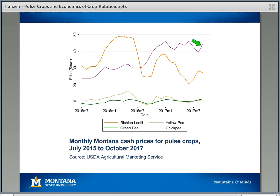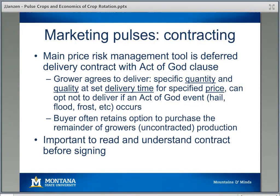Given that pulses have looked relatively good, what are some useful things growers need to know before including pulse crops in their rotation? Obviously there are agronomic considerations — what you need to know about putting this crop in the ground, what herbicides and fungicides you need to grow a high-yielding, high-quality crop of peas, lentils, or chickpeas. I'll focus more on the economic considerations.